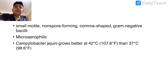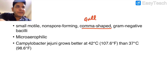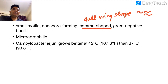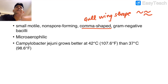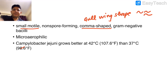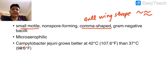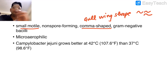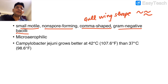Morphologically, Campylobacter looks comma-shaped, also called gull-wing shaped. Comma is typical of Vibrio, but Campylobacter is more accurately gull-wing shaped. It is motile and has a single flagellum, or single flagella on both sides (amphitrichous). It does not produce spores.